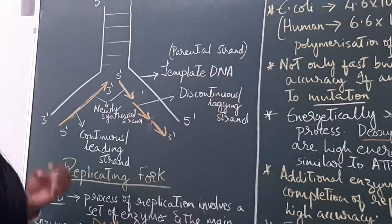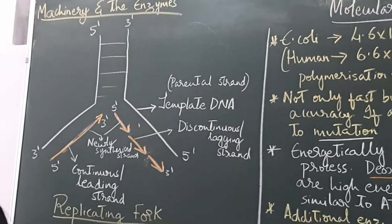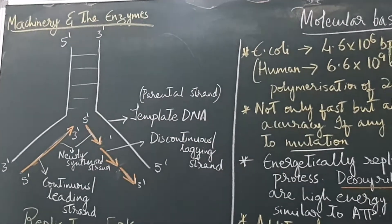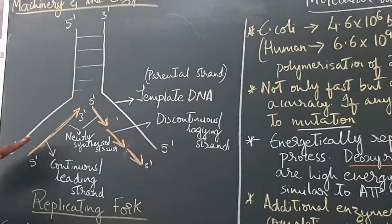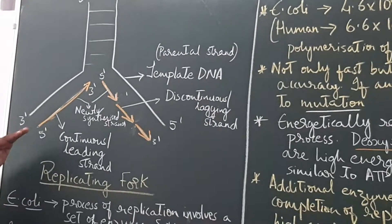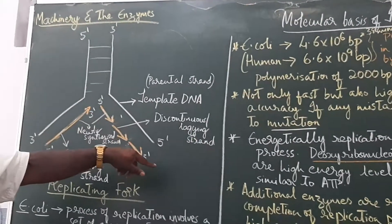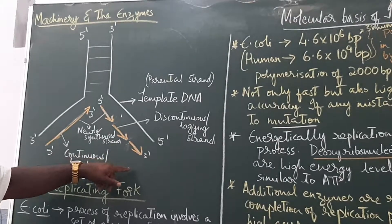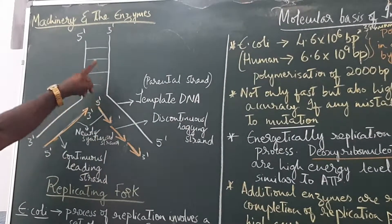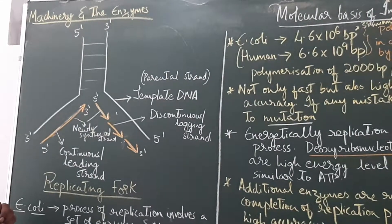There are two important enzymes involved in replication: DNA-dependent DNA polymerase and ligase. DNA-dependent DNA polymerase always synthesizes new strands in the 5' to 3' direction. When the template strand runs 3' to 5', synthesis is continuous, but when synthesis must proceed away from the fork, it becomes discontinuous — we call this the lagging strand. The continuous strand is called the leading strand.